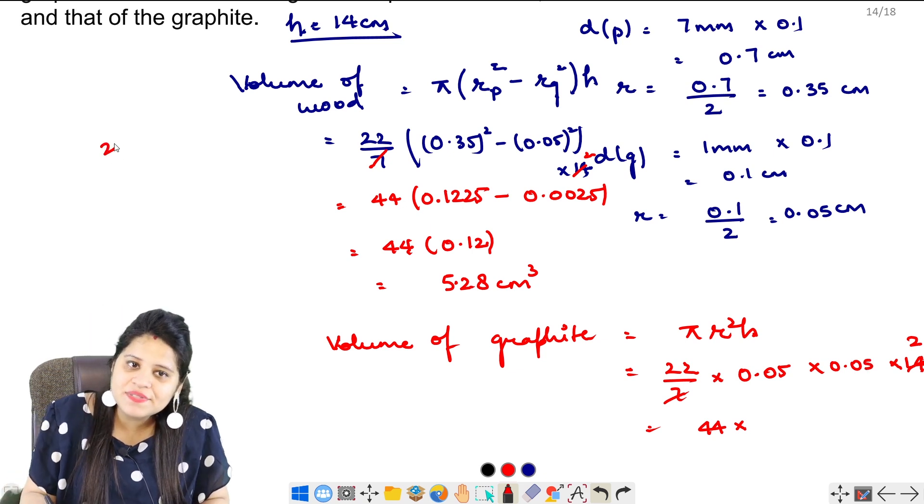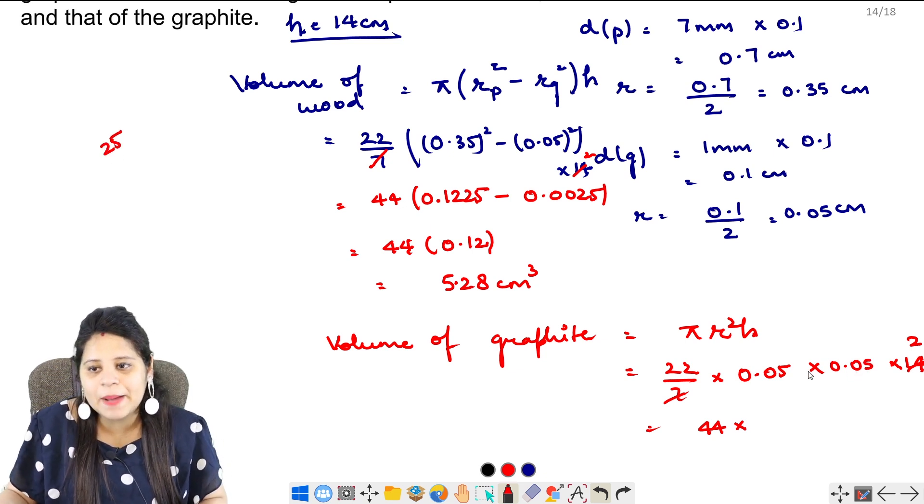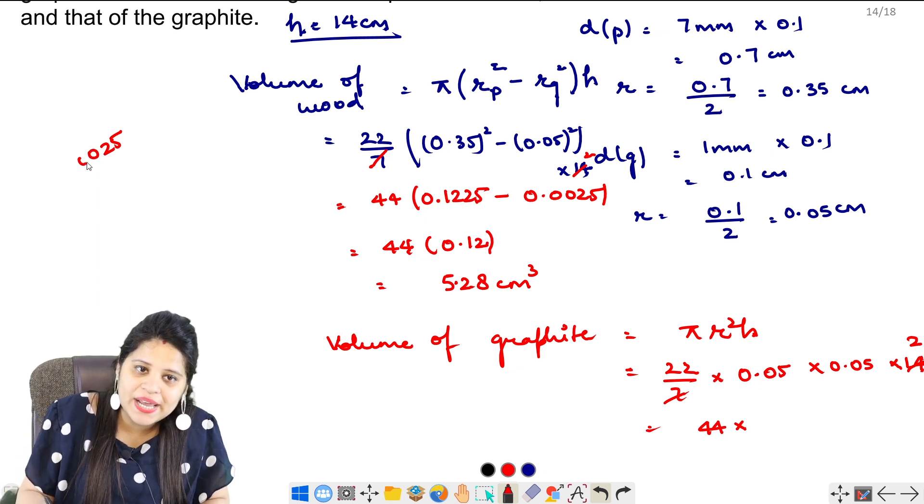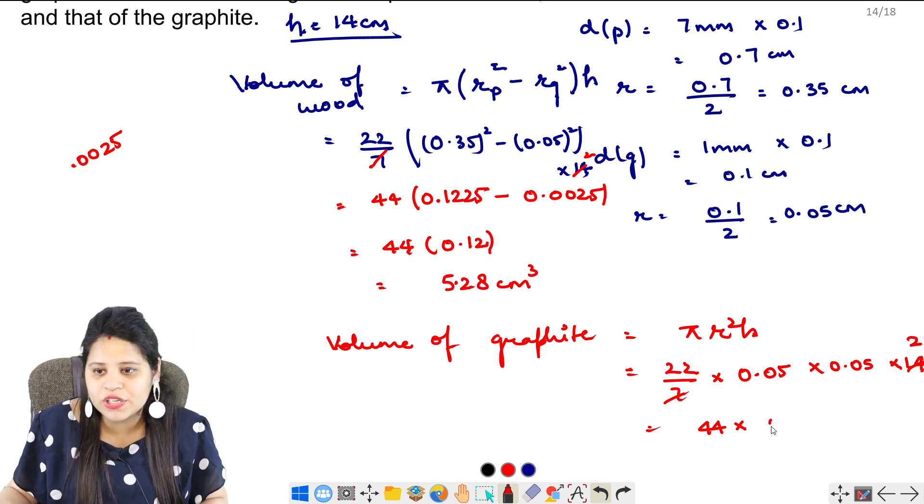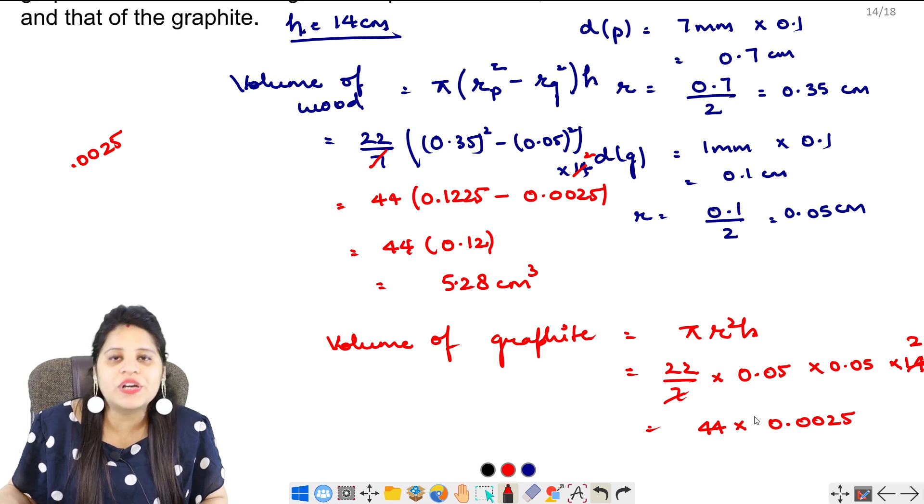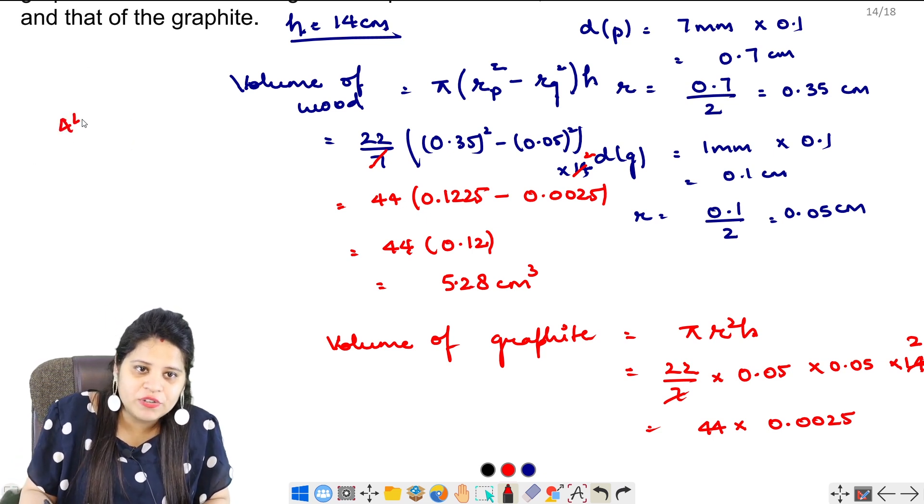Now, let's see. 5, 5's are 25. But here we have 4 digits. First, we have to add decimal. So this will be 44 into 0.0025. So we multiply 44 and 25.